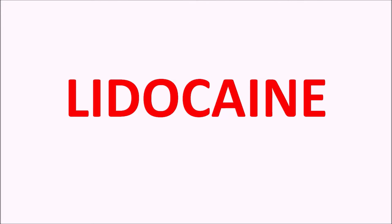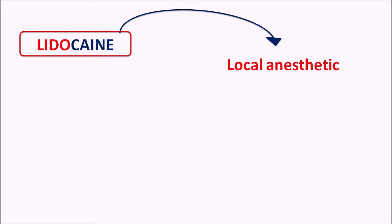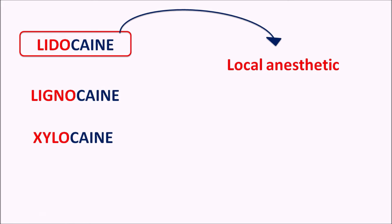Hi everyone. Today in this video we are going to discuss about lidocaine. What is this drug lidocaine? The suffix '-caine' indicates this drug acts as a local anesthetic. Lidocaine can also be called lignocaine and it is well known by the brand name xylocaine. All these are synonyms for lidocaine, and lidocaine is an amide-type local anesthetic.